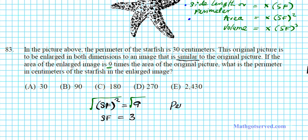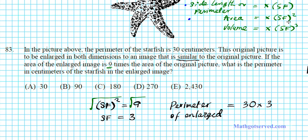So since the original perimeter is 30 centimeters, the perimeter of the enlarged image is going to be — remember, perimeter and side length, you just simply multiply by the scale factor. The old perimeter is 30. The scale factor is three, not nine — nine is the scale factor squared, which applies to the area. So we multiply 30 by three. 30 times three is 90 centimeters. That is the perimeter of your enlarged image. So option letter D is our answer.